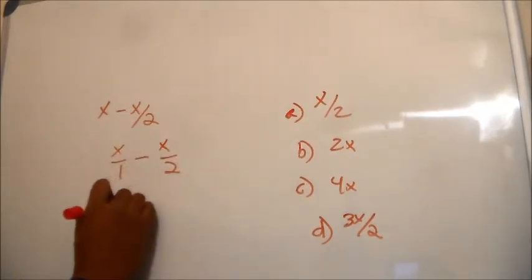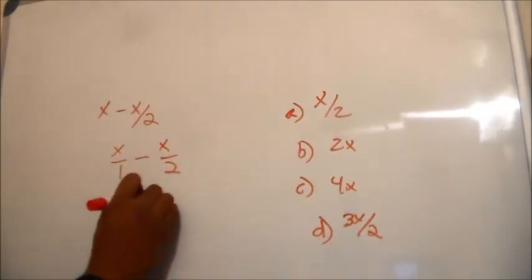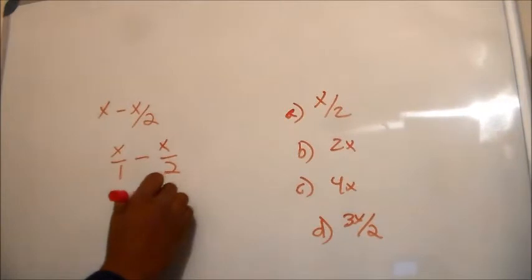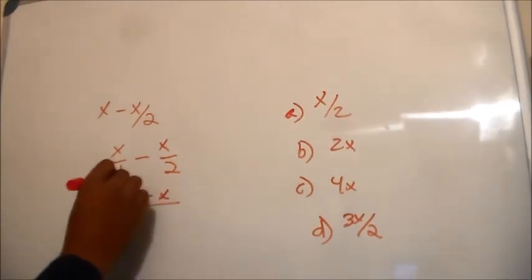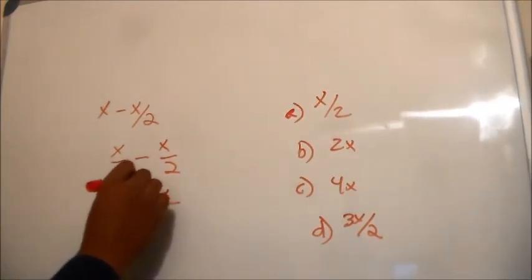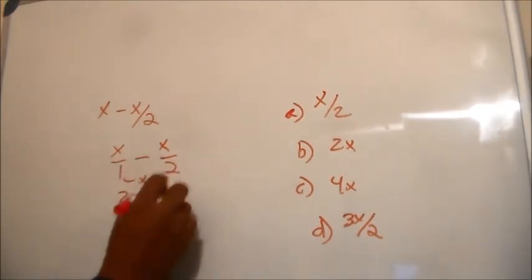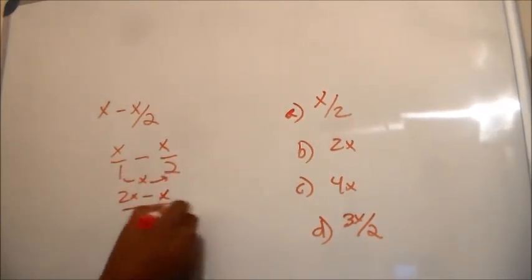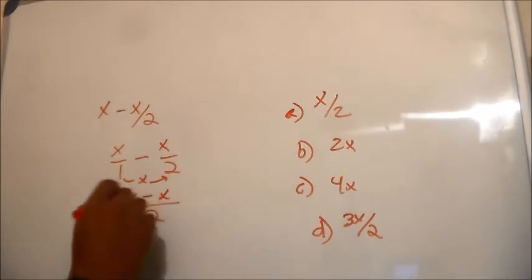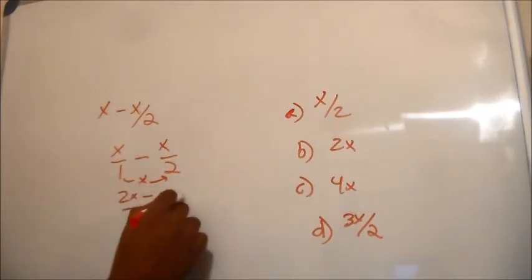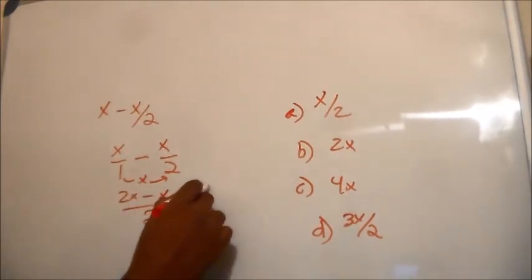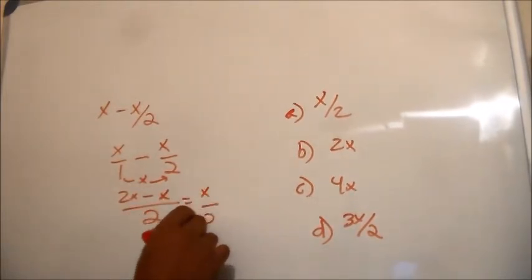Cross multiply the denominators: 2 times X minus 1 times X, over the product of 1 times 2 which is 2. So 2X minus X equals X over 2, which is answer A.